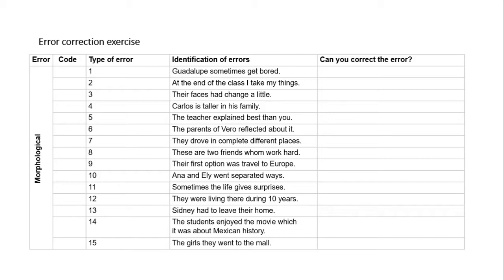Sentence seven involves a type of word form error. These types of mistakes occur on grammar tests like the TOEFL. The answer is 'completely' instead of 'complete' — this is an adverb error, where an adjective is used instead of an adverb.